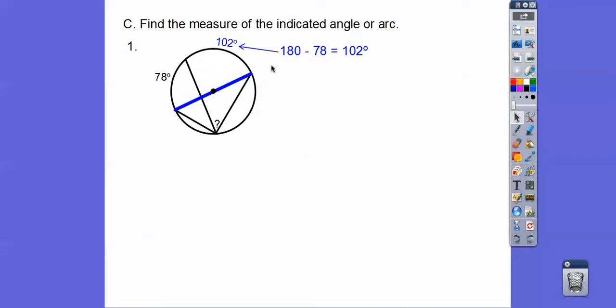So if we take the 78 off, then we can find out that this arc right here is 102. Now, this is an inscribed angle. Inscribed angles are half their intercepted arc. So we just take half of 102, we get 51.